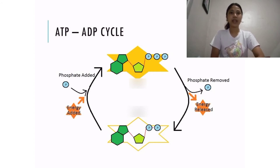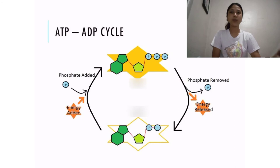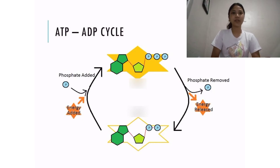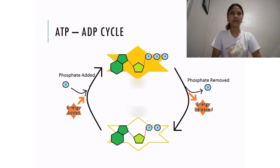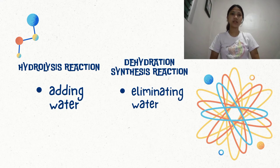While converting ADP to ATP, we need to add energy because adenosine triphosphate has three phosphate groups — that's why we need to add one. So we will add energy and we will add one inorganic phosphate. This is called an endergonic reaction, because energy and inorganic phosphate enter to convert ADP to ATP. ATP has the hydrolysis reaction while ADP has the dehydration reaction.